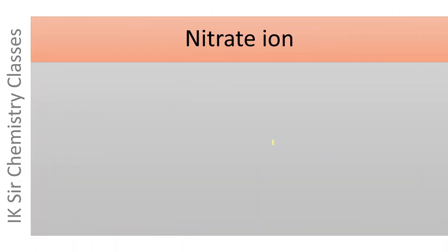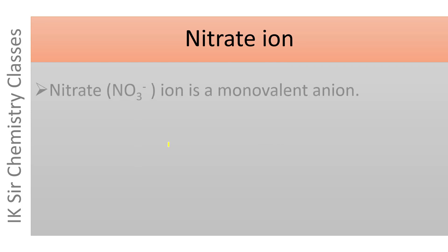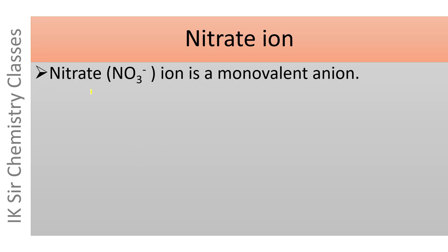First of all we will see what is nitrate ion. Nitrate ion, that is NO3 minus ion, is a monovalent anion — that is, nitrate ion is an anion having one negative charge.